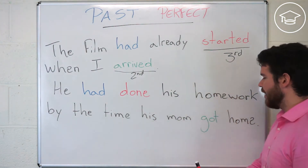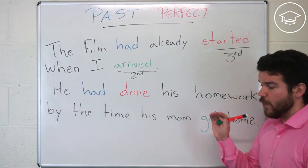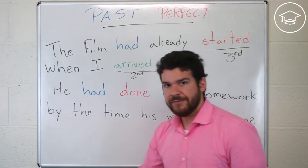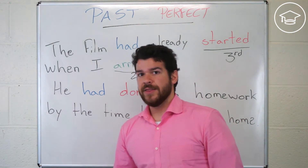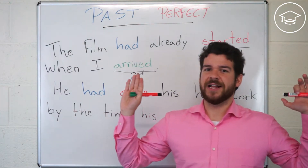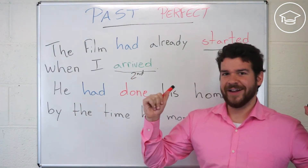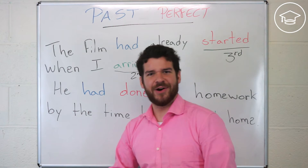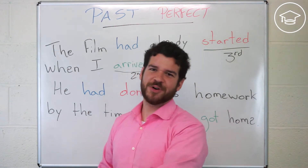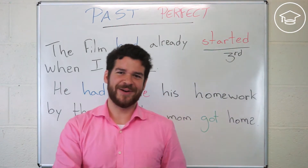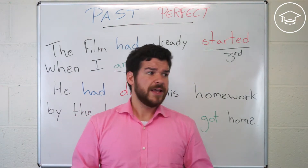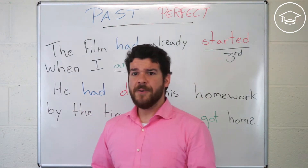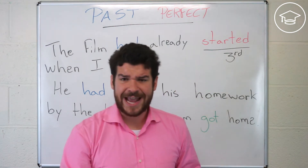'Done' is third column, 'got' is second column. He had done his homework by the time his mom got home. So when she arrived, when she got home, the homework was already done. Be smart kids — do your homework before your parents get home!